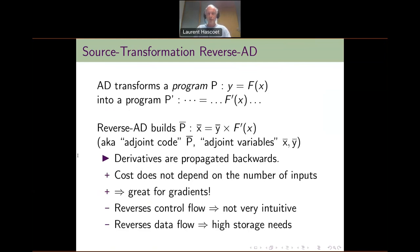Before we go into the parallel details, we recall a few properties and definitions about reverse mode automatic differentiation. In general, AD transforms a program that computes a function f into a program p-prime that computes some derivatives. In particular, reverse mode AD builds a program p-bar that computes the derivative of f, multiplied on the left by a vector which is a weighting of the various outputs of f.